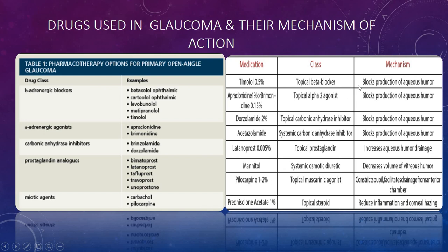Regarding mechanism of action: timolol (beta-adrenergic blocker) blocks the production of aqueous humor. Apraclonidine (alpha-adrenergic agonist) also blocks aqueous humor production. Dorzolamide and acetazolamide (carbonic anhydrase inhibitors) also block aqueous humor production. Latanoprost (prostaglandin analog) increases aqueous humor drainage. Mannitol, used mainly in closed-angle glaucoma, decreases the volume of vitreous humor. Pilocarpine (miotic agent) constricts the pupil and facilitates drainage from the anterior chamber. Prednisolone acetate reduces inflammation and corneal hazing and is used in closed-angle glaucoma.